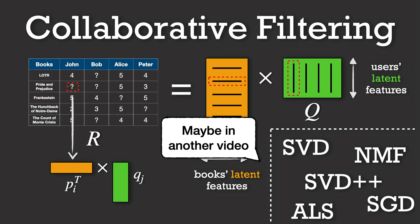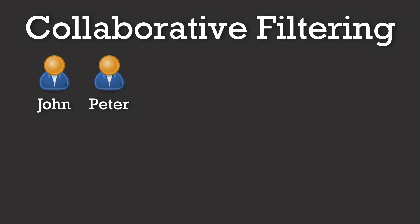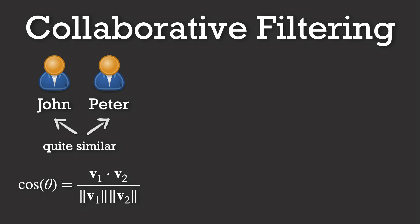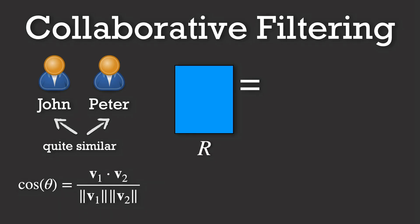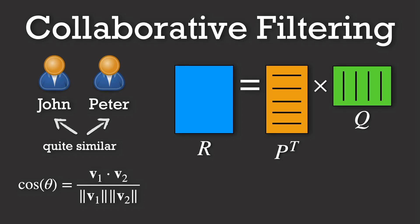I would like this video to be more of a focus on the intuition behind collaborative filtering rather than a specific implementation. With all this being said, that's basically how collaborative filtering works in recommender systems — it simply analyzes user rating patterns and leverages the collective wisdom of similar users to predict missing preferences.